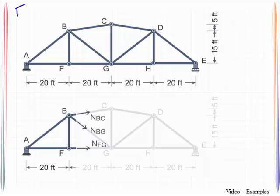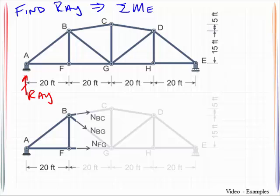First thing I'm going to do is find the reaction at AY. I'm going to find this right here. And I'm even going to answer how I'm going to achieve that. I will sum moments about point E. So regardless of where the load is being placed, I'm going to sum moments about point E to solve for the reaction at AY.